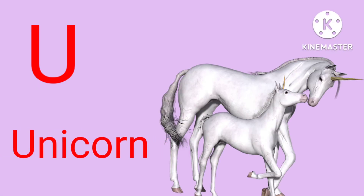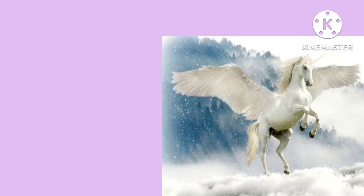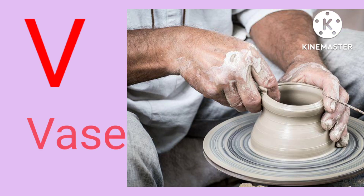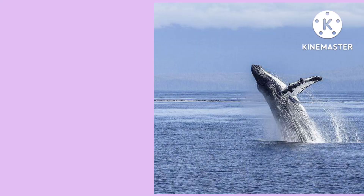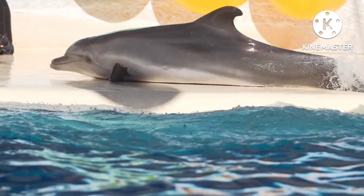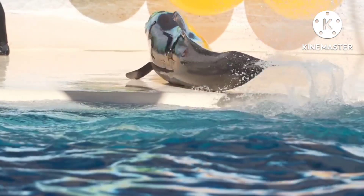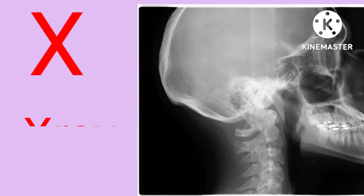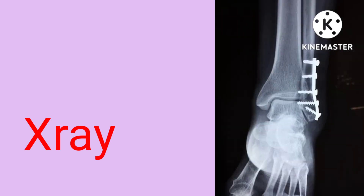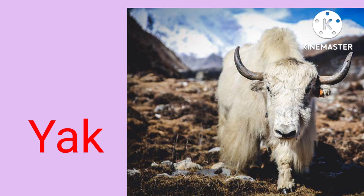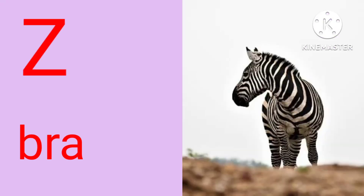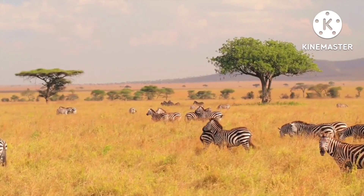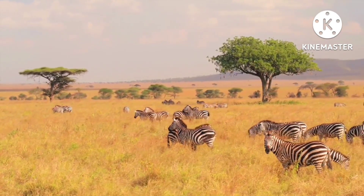U for unicorn, V for fox, W for eel, X for X-ray, Y for young, Z for zebra.